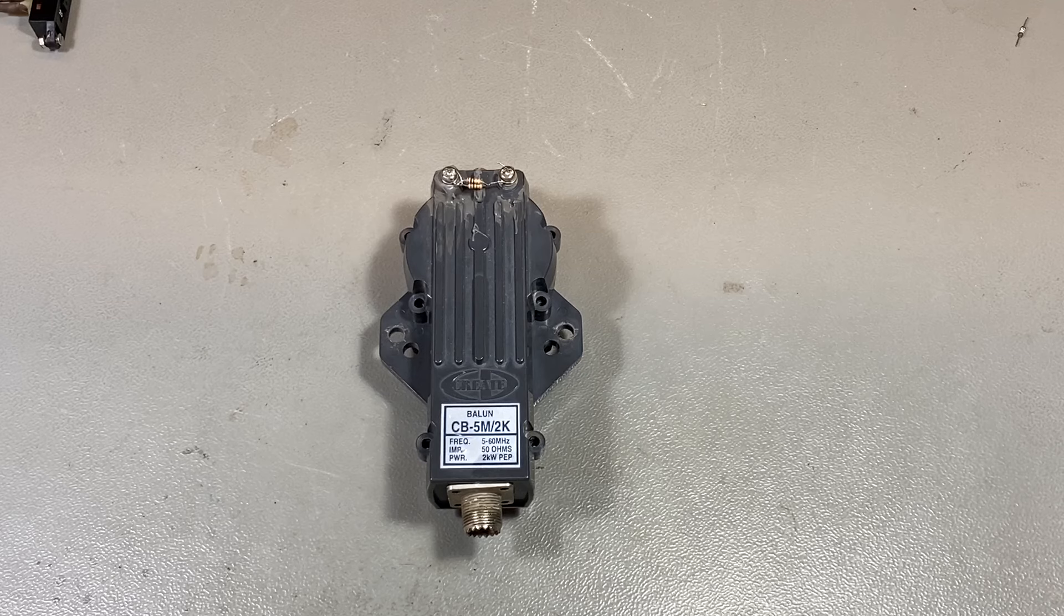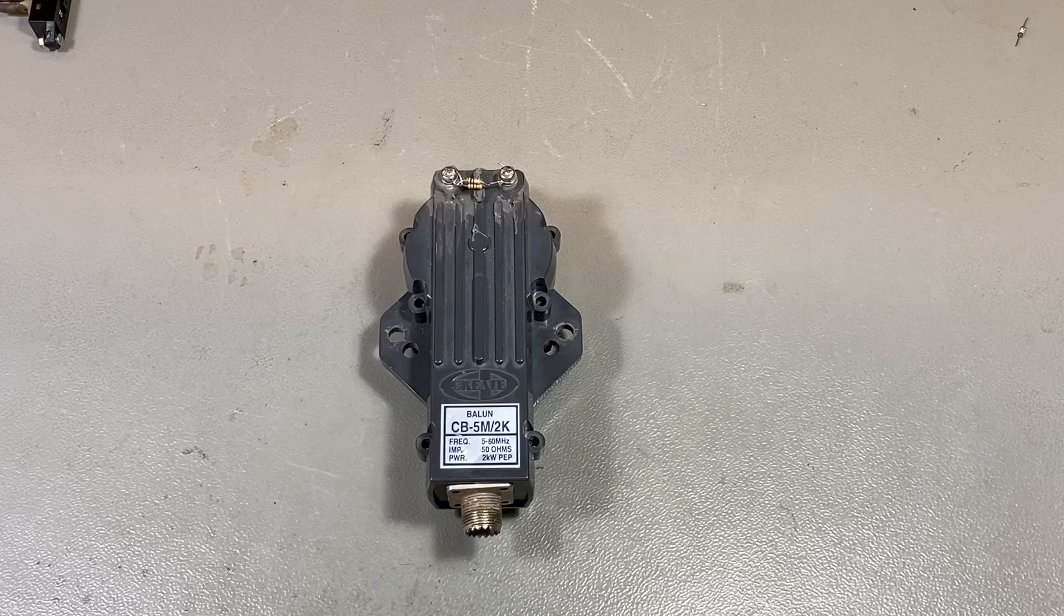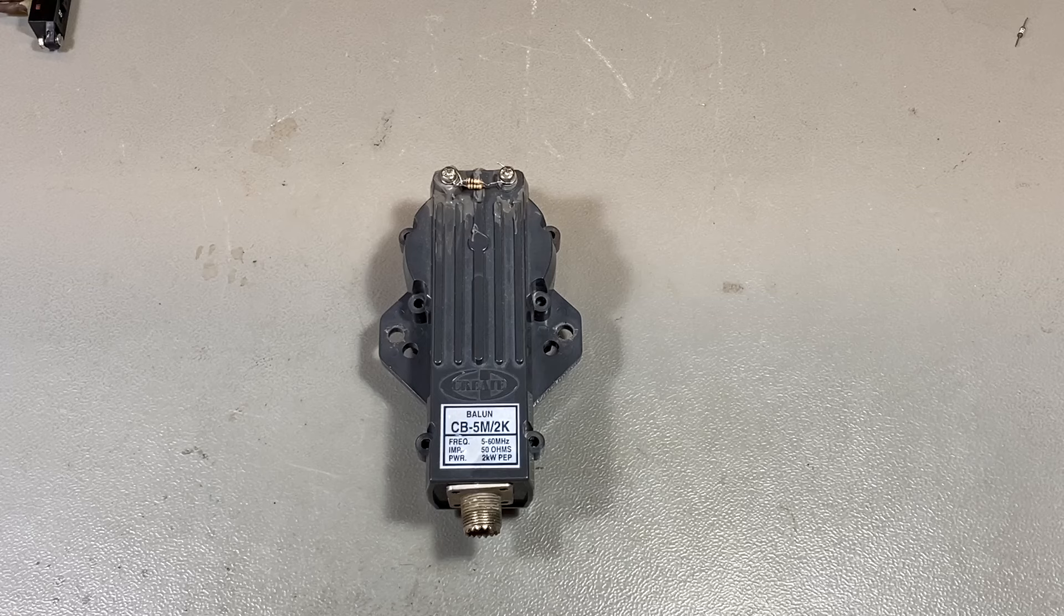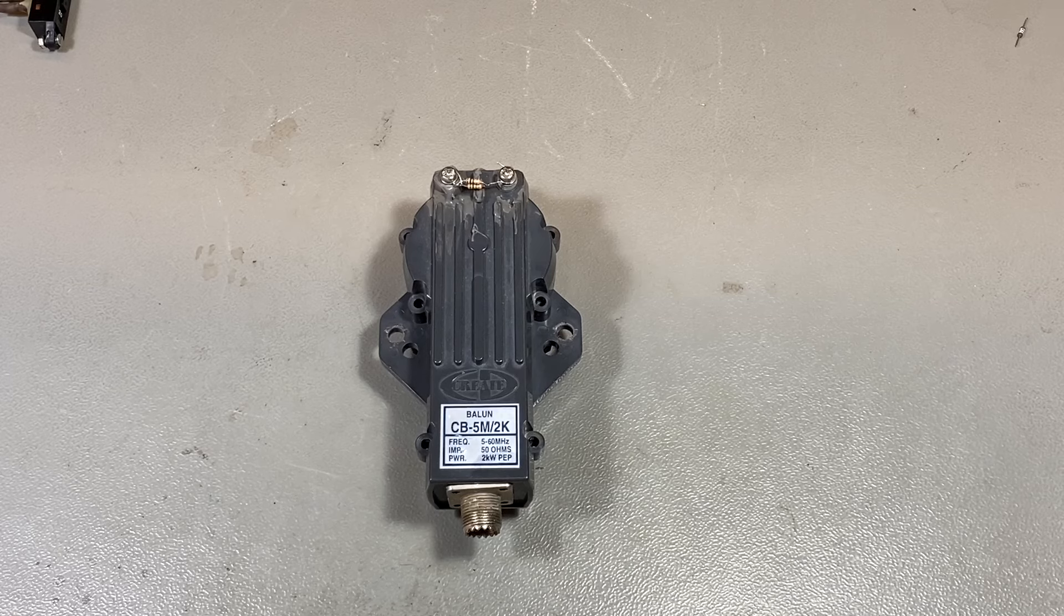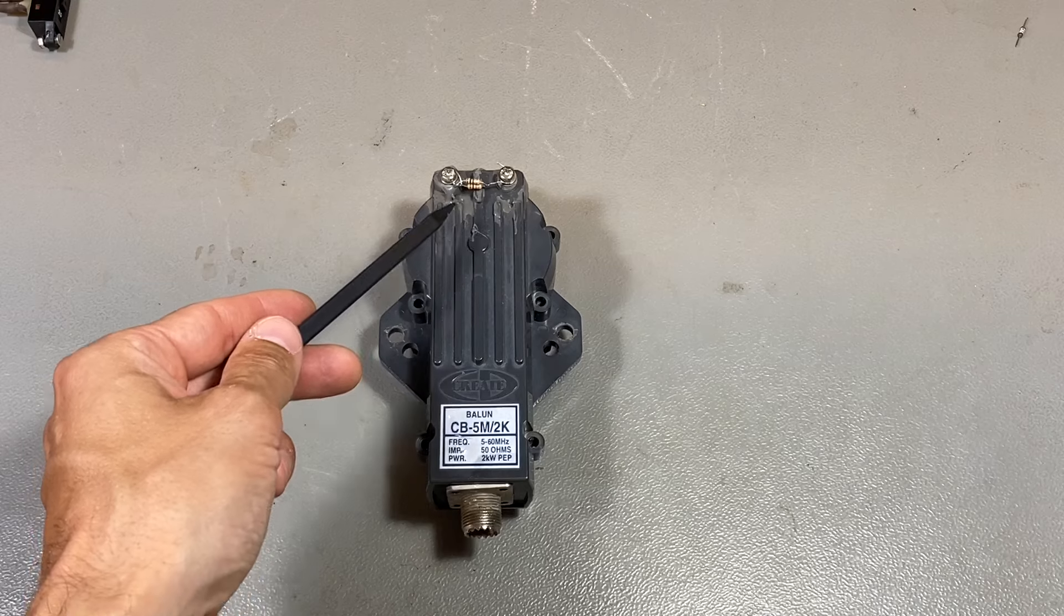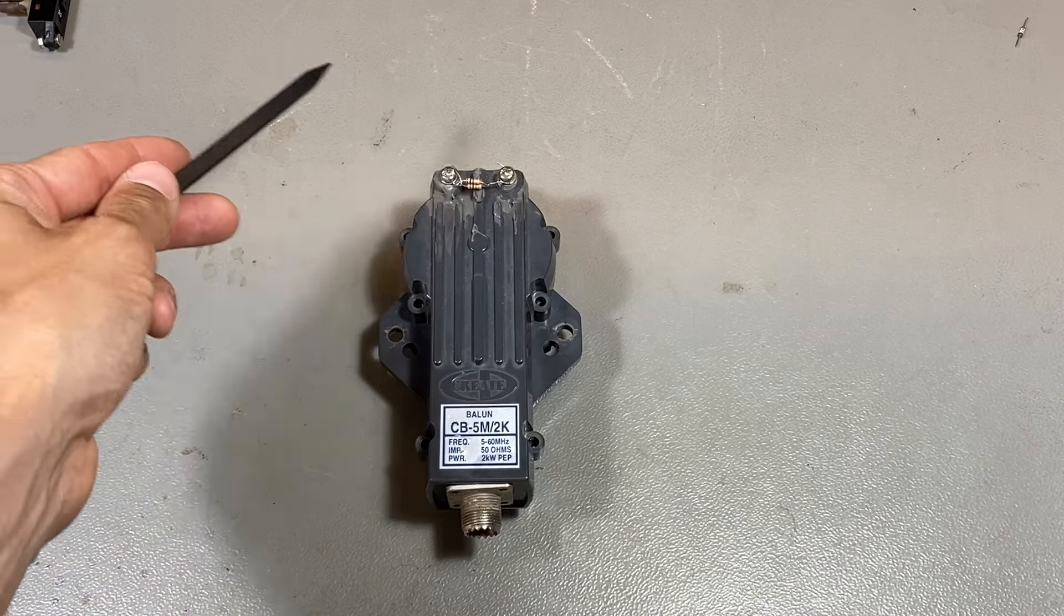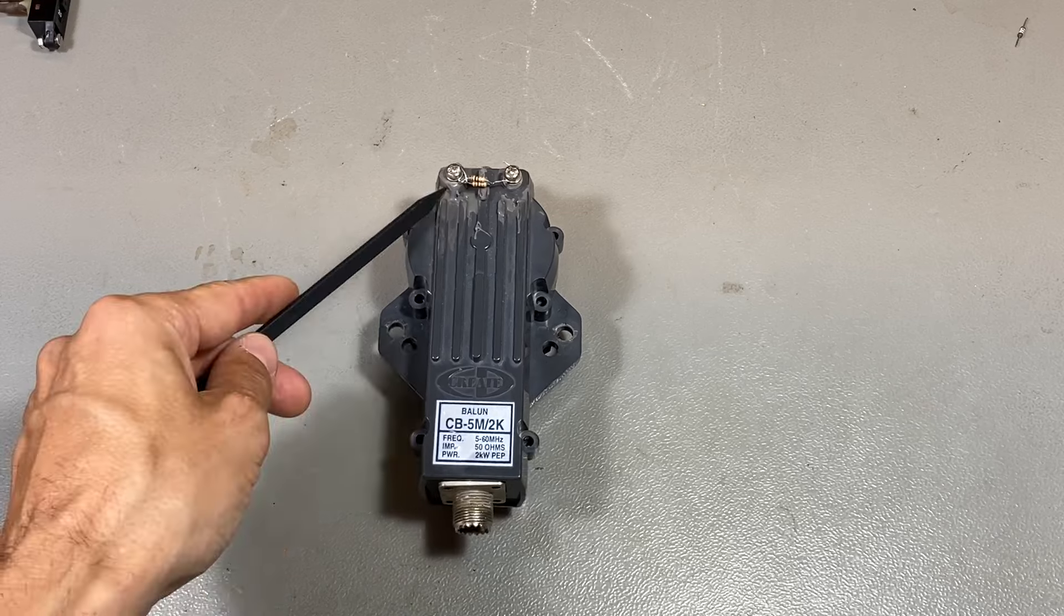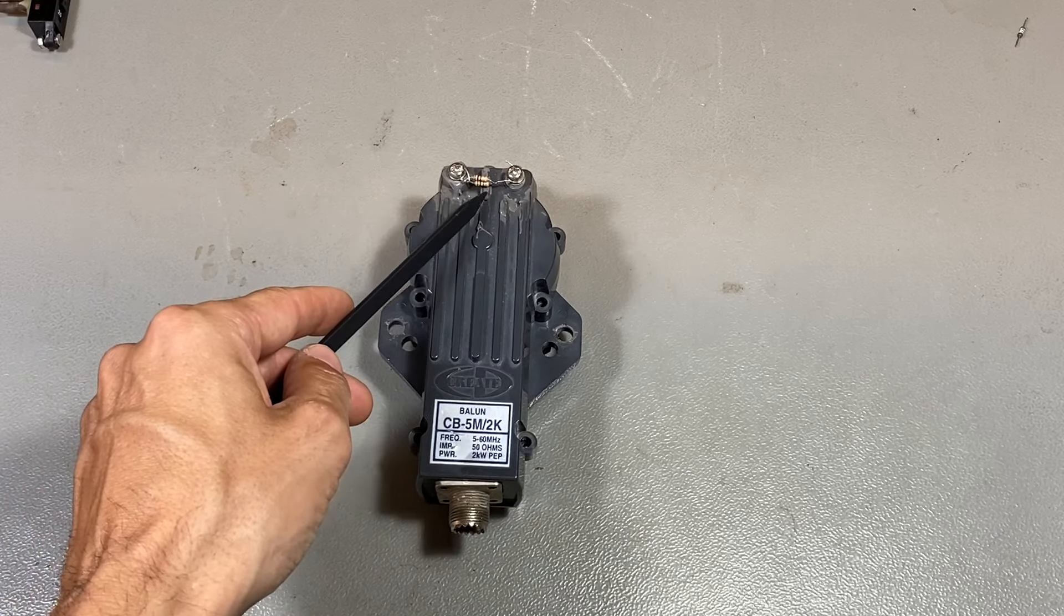Recently I changed my antenna configuration on the roof, so I dismantled this one and thought I'd have a look at the balun itself. As you can see here, I have terminated the terminals that go to the dipole, to the two arms of the dipole, with resistive non-inductive loads, 200 ohms in parallel.